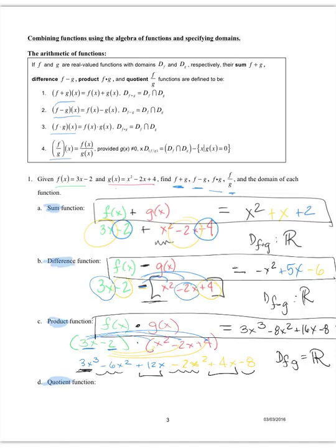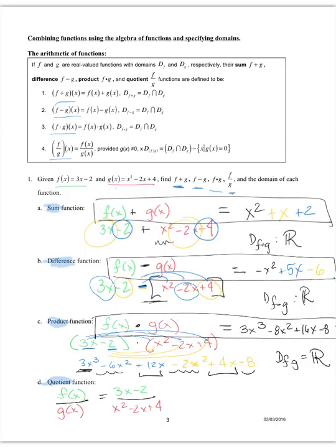For the quotient f(x)/g(x), the numerator is 3x − 2 and the denominator is x² − 2x + 4. To find domain restrictions, we try to factor the denominator. Using the quadratic formula yields complex roots, so for real-valued functions the domain here is all real numbers.